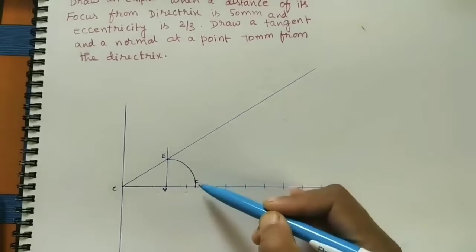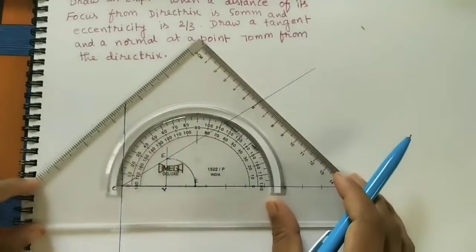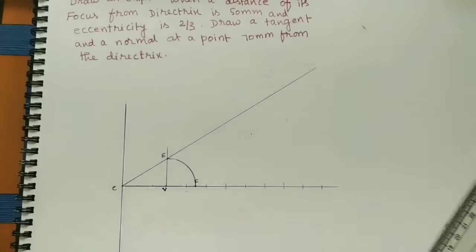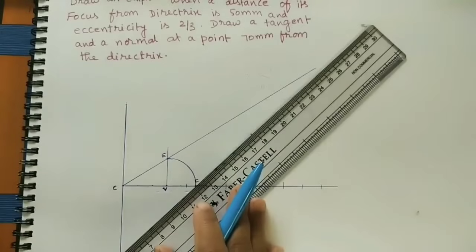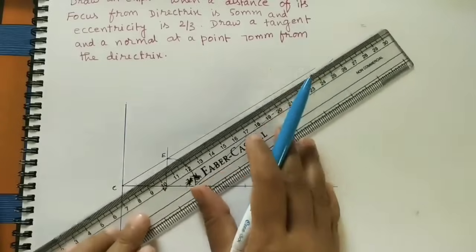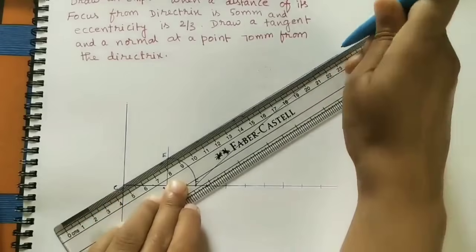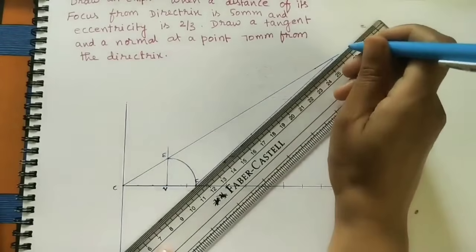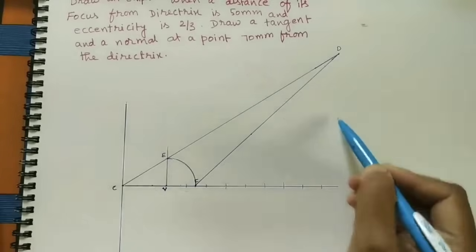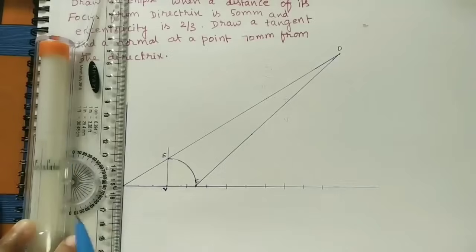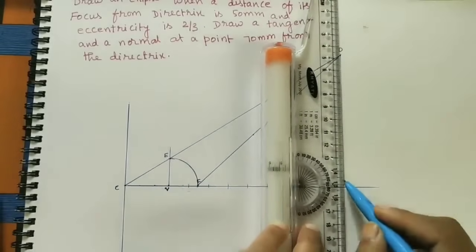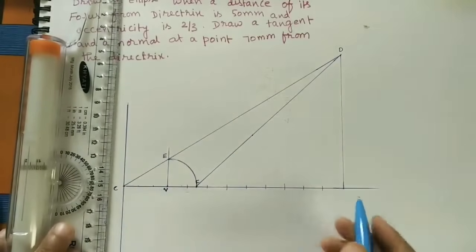After getting the inclined line, at F (focus) draw a 45-degree line with the horizontal. Join F to that point and extend the line. Extend the inclined line also so we get one intersection point. Name this intersection point D. At D, draw a vertical line on the axis. This is the end point of the ellipse - the starting point is V and the end point is V'.